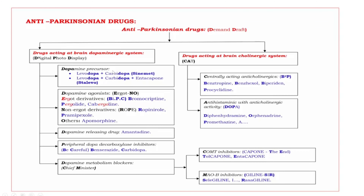Dopamine precursors are combination drugs. The first one is Sinemet, a combination of levodopa and carbidopa. The second one is Staleo, a combination of levodopa and carbidopa.